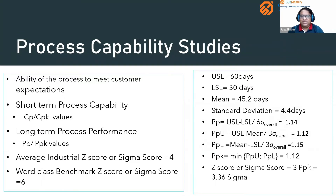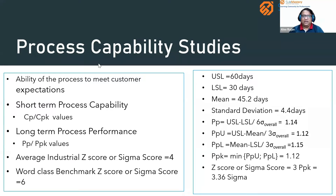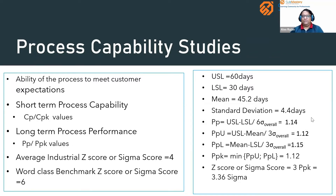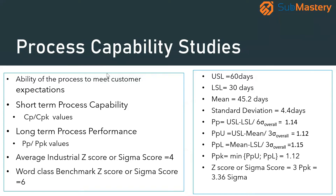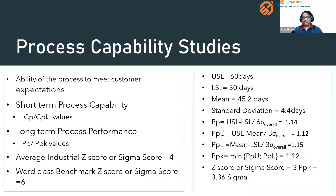In this example, the USL is 60 days, the LSL is 30 days, the mean is 45.2 days, and the standard deviation is 4.4 days. The PP value is calculated as USL minus LSL divided by six times the overall standard deviation, giving PP = 1.14. PPU and PPL are then calculated; substituting values gives PPL = 1.15 and PPU = 1.12. The minimum of PPU and PPL is 1.12, which becomes the PPK value.